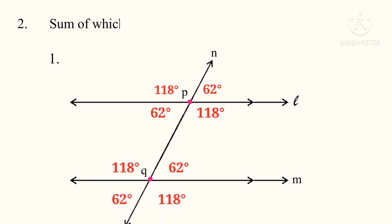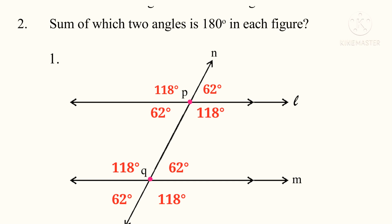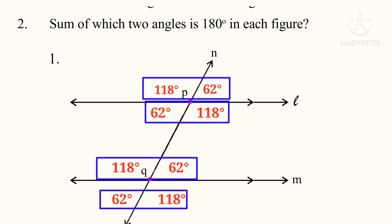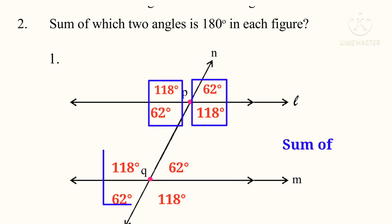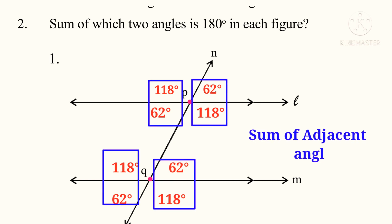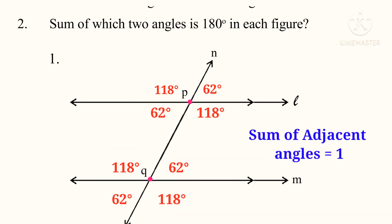Number 2: sum of which two angles is 180 degrees in this figure? Observe that 118 plus 62 equals 180 degrees. These are side-by-side angles. So the sum of adjacent angles is 180 degrees in this figure.